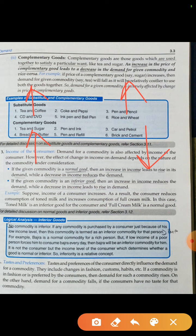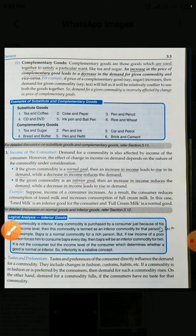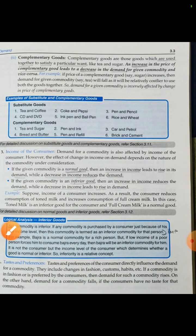एक और determinant है taste and preference। अगर कोई good किसी के taste और preference का है तो उसकी demand हमेशा increase होगी। जैसे कोई clothes जो fashion में है — जैसे ही उसकी price कम होगी या income बढ़ेगी उसकी demand बढ़ने लगेगी। लेकिन अगर कोई goods taste या fashion में नहीं है तो उसकी demand decrease होती है। यह हो गया हमारा taste and preference determinant।